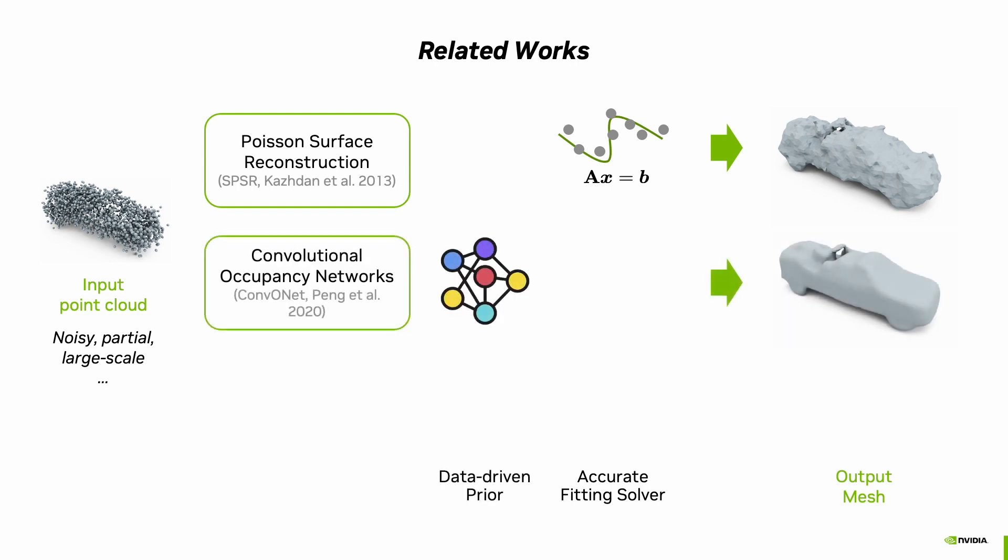Recent advances in deep learning techniques have enabled the use of data-driven priors. For example, convolutional occupancy networks use a feed-forward network to directly infer implicit surface values. However, this method may produce over-smooth results that do not accurately represent the input points.